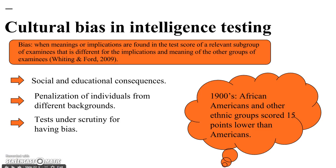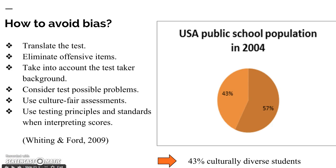Cultural bias is one of the major issues in intelligence assessment. In the 2000s, test results were used for employment, graduation, promotions, college admissions, placement, and special education placement. Because of cultural bias, minority groups suffered social and educational consequences, as low scores equaled limited opportunities. Most research on cultural bias has been conducted with African American populations, finding that African Americans and other ethnic groups scored 15 points lower than White Americans. The Wechsler, Binet, and Peabody Picture Vocabulary tests were examined for possible bias. By 2004, 43% of students in U.S. public schools were culturally diverse, and that number has been increasing every year.